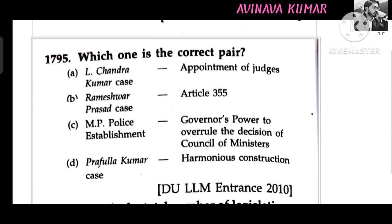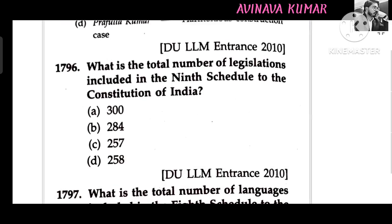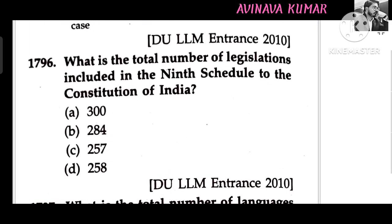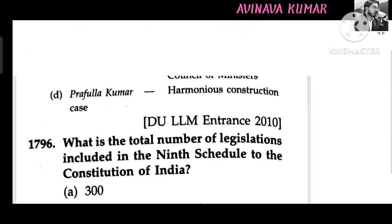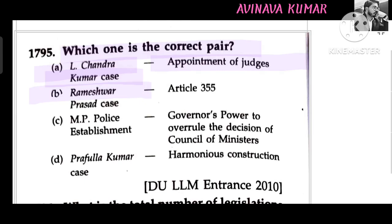Which one is a correct pair? A — L. Chandra Kumar case is related to appointment of judges. B — Ramesh Prasad case is Article 355; this one is wrong.